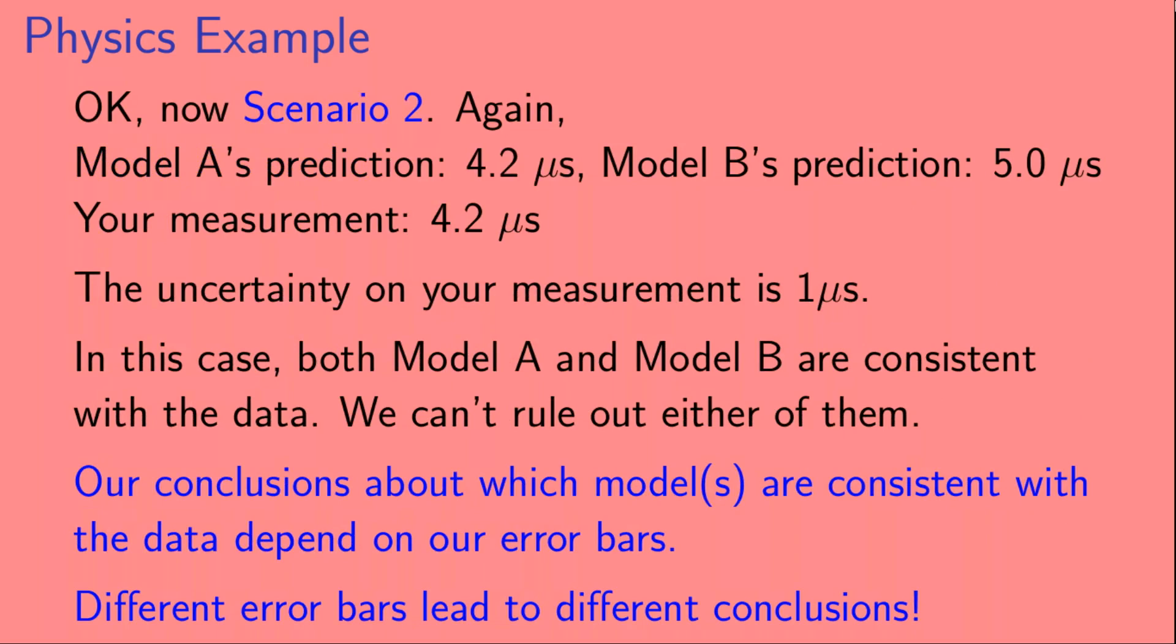Okay, so now let's look at a second scenario. Again, Model A's prediction is 4.2 microseconds, Model B's prediction is 5.0 microseconds, and your measurement was 4.2 microseconds. But this time, the uncertainty on your measurement is 1 microsecond.